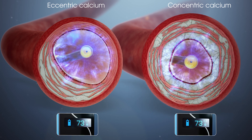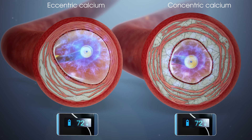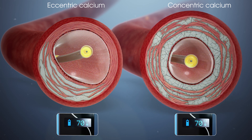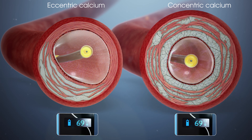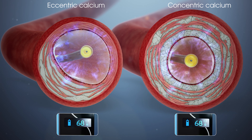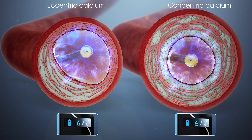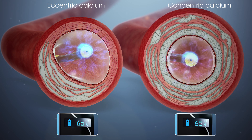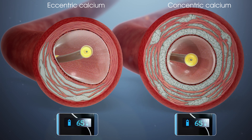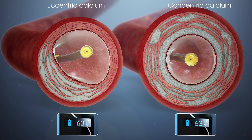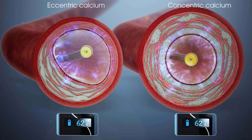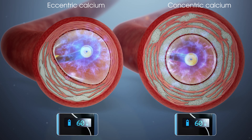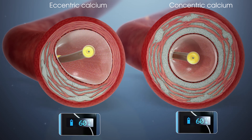While each pulse's energy is identical, shock waves crack concentric lesions quicker due to the rigid ring of calcium that traps the energy, leaving no other paths to dissipate other than cracking. Waves also reflect off calcium and impact the calcium in the opposite wall.